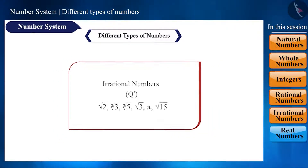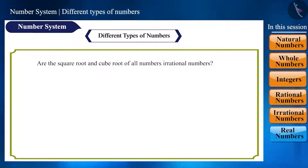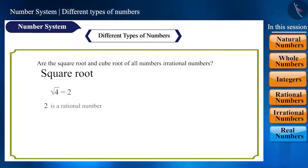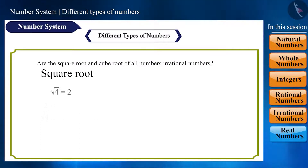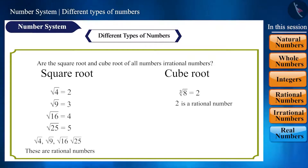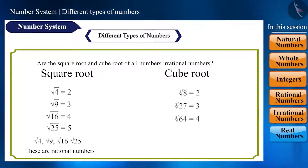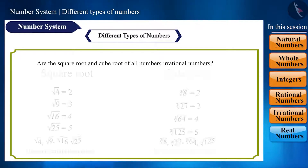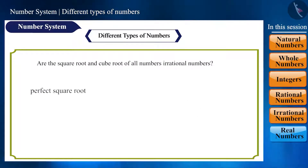Friends, are you thinking that the square root and cube root of all numbers are irrational numbers? No. For example, root 4 is 2, and 2 is a rational number, so root 4 is a rational number. In the same way, root 9, root 16, and root 25 are rational numbers. And speaking of cube roots, cube root of 8 is 2, which is a rational number, so cube root of 8 is a rational number. Similarly, cube root of 27, cube root of 64, and cube root of 125 are rational numbers. Numbers that are perfect square roots or perfect cube roots are called rational numbers.